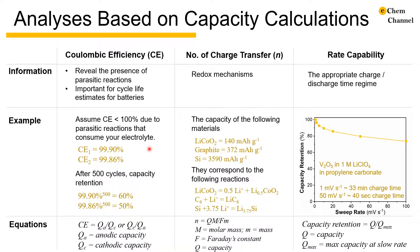Take coulombic efficiency of 99.9% and 99.86% for example. On the surface, they are both very close to 100% and are only 0.04% apart from each other.